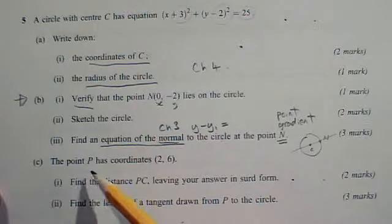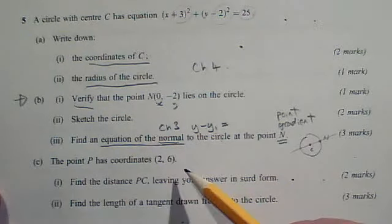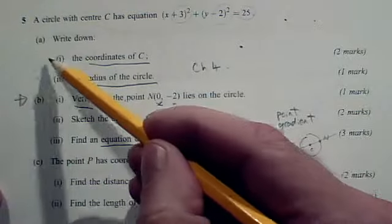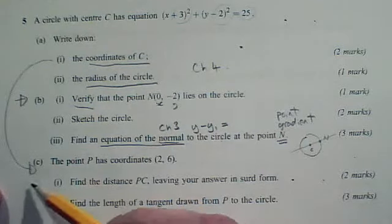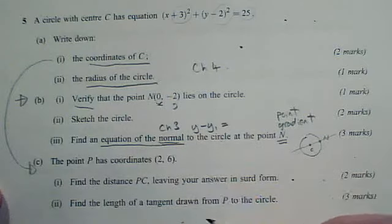Then in part C we've got the point P with coordinates (2, 6). We do need to have the coordinates of C from this, but we can have skipped out part B. It's effectively a re-entry point as long as you've got the centre of the circle.